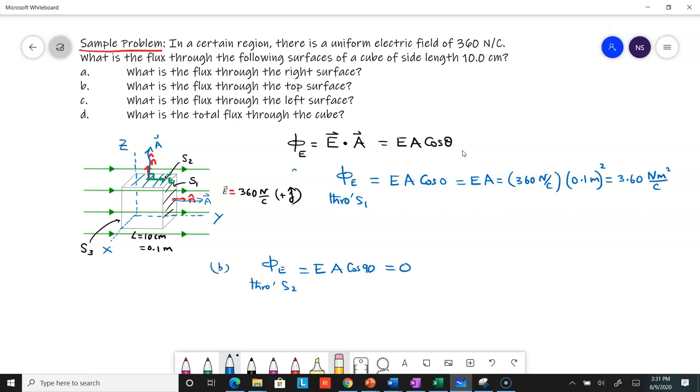This is just zero. That's part B, and this was part A. I can do the same for S3, the left surface.